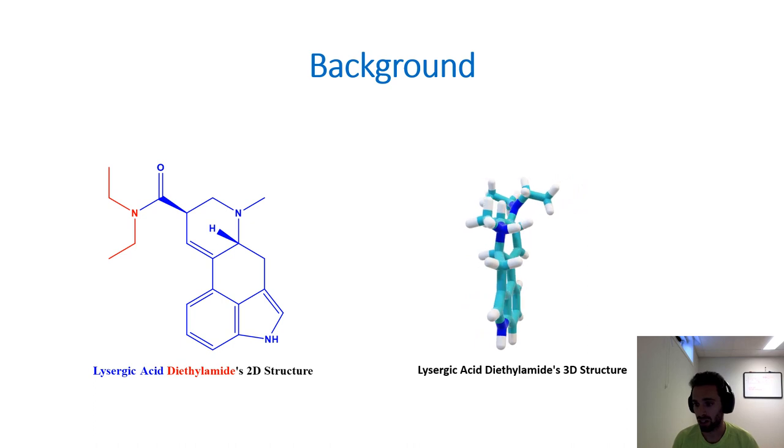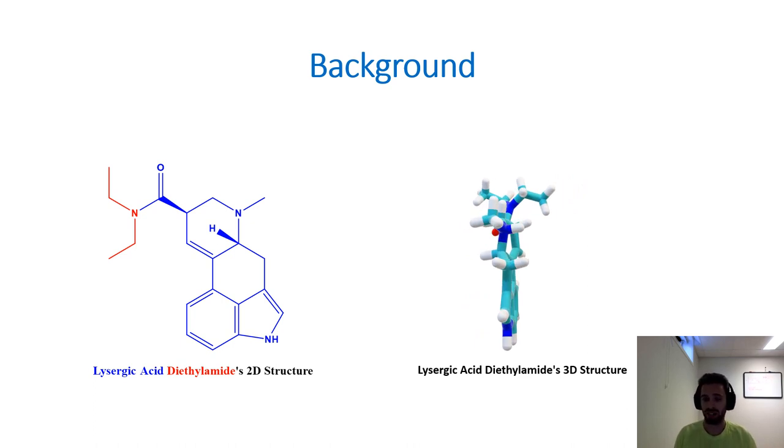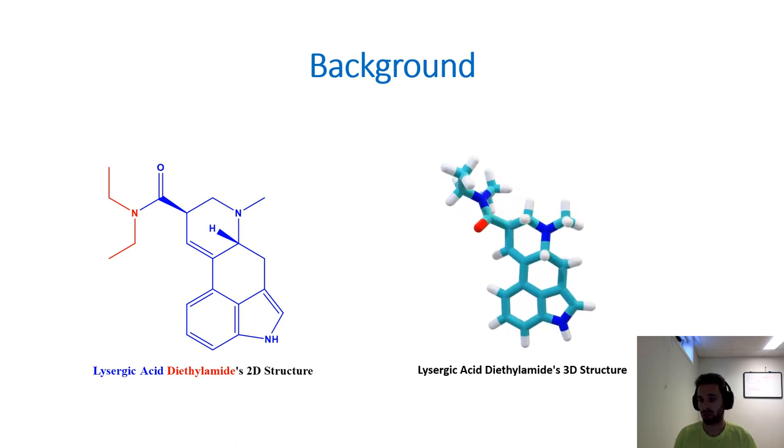If we spin it another 180 degrees, we can see the molecule from the other side. And then if we spin it 90 degrees, we can go back to the original starting position of the molecule.